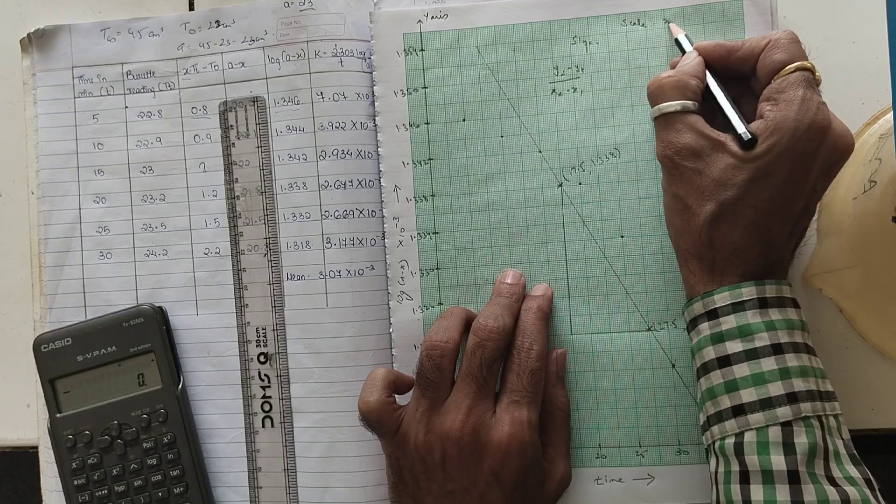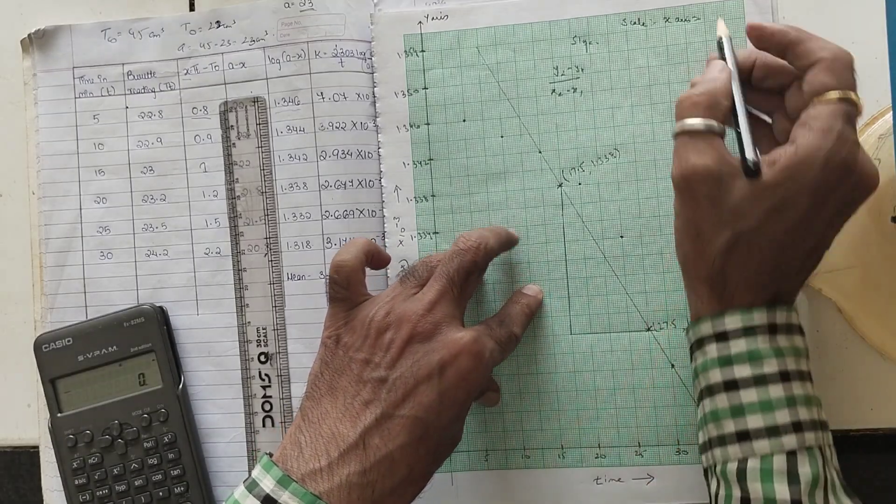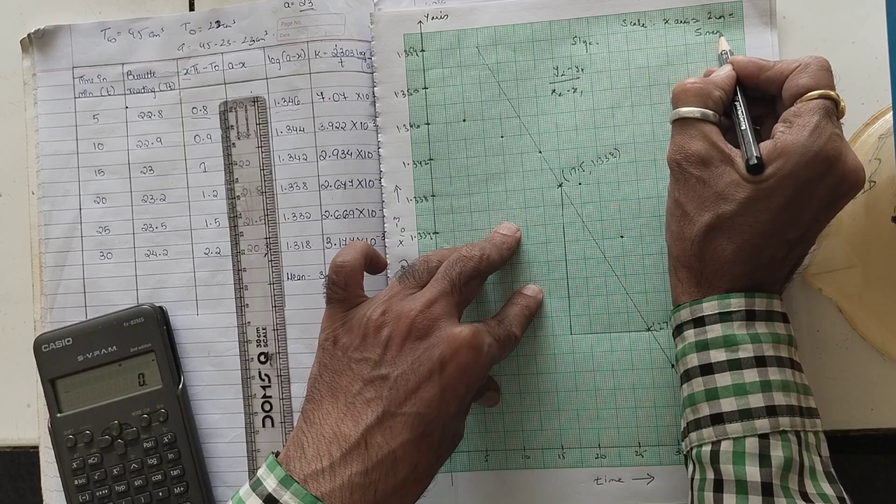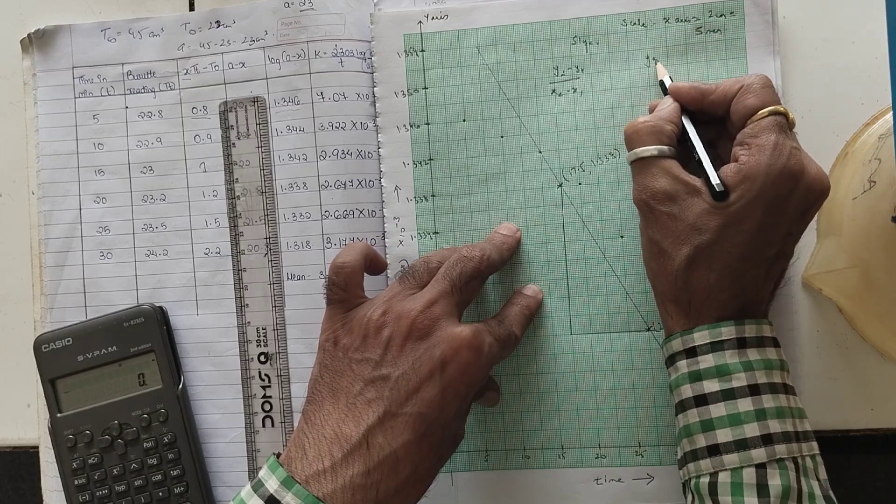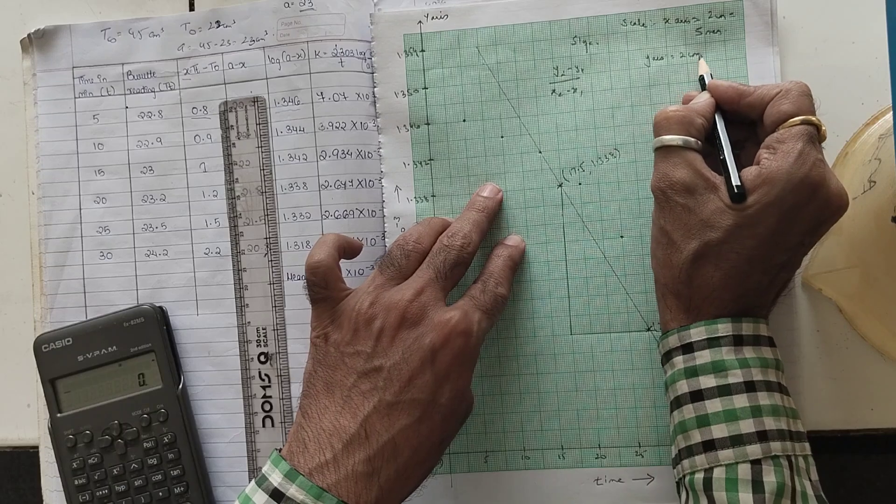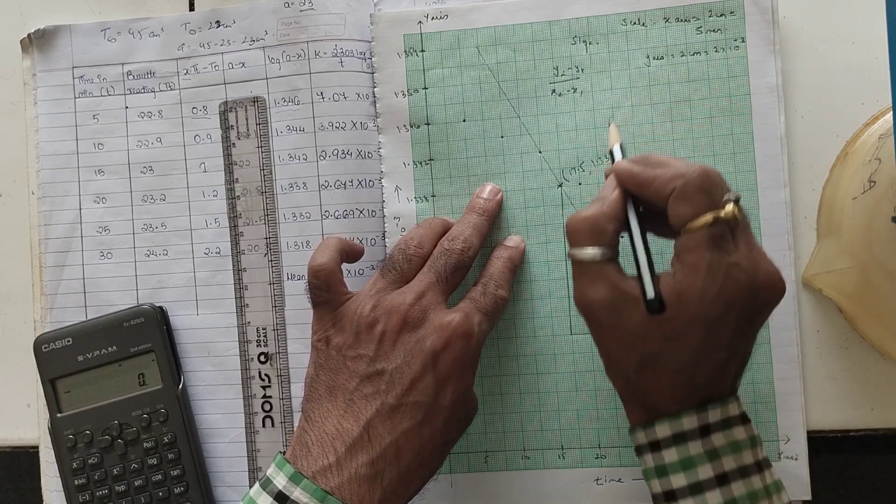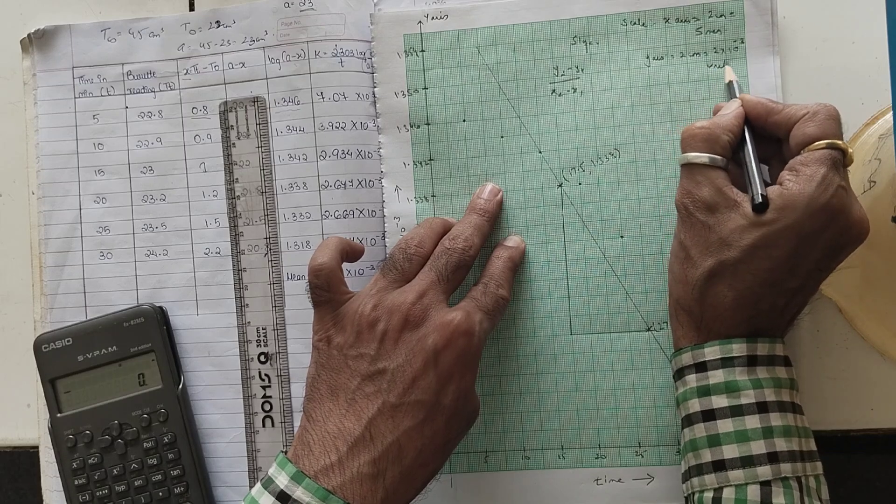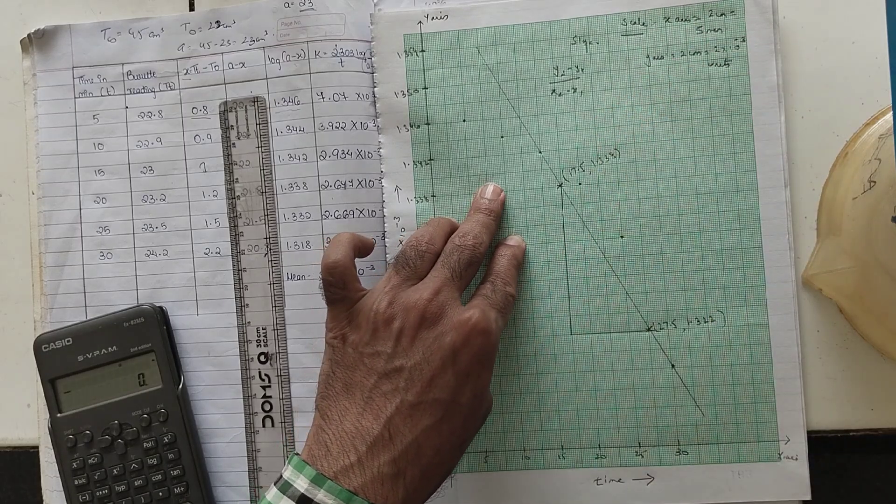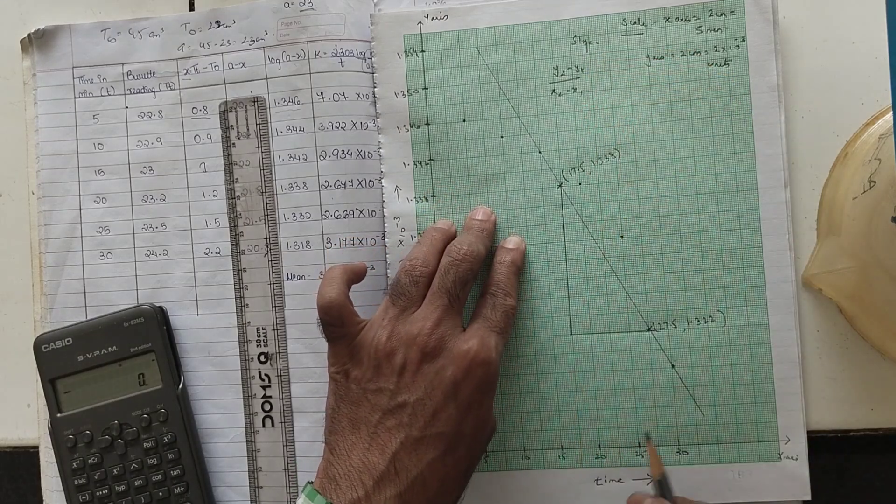Before which you have to write down the scale. X axis is equal to 2 centimeter equal to 5 minutes, and Y axis we are going to take it as 2 centimeter equal to 2 into 10 raise to minus 3 units. Don't forget 10 raise to minus 3 also, my dear friends. This has to be written on the top right side of the graph paper. This is the formula of the slope.